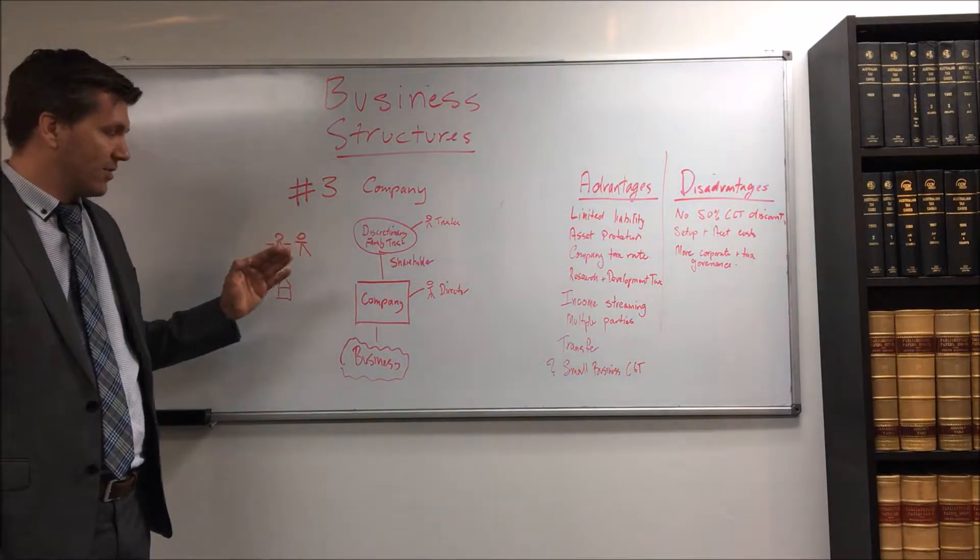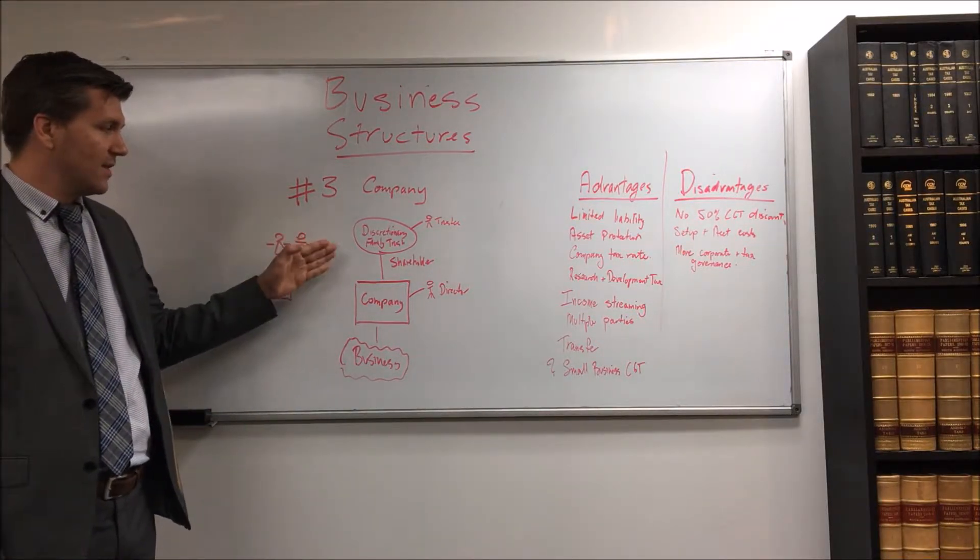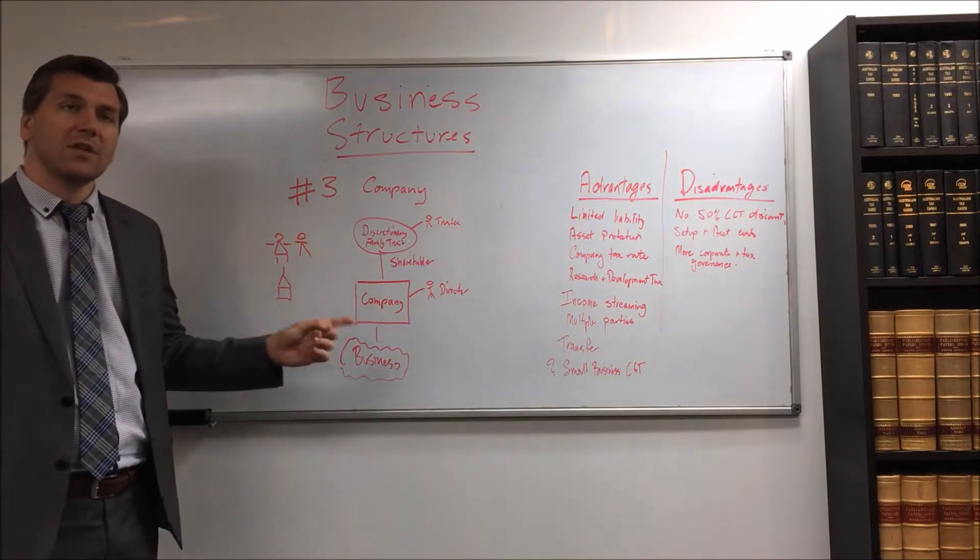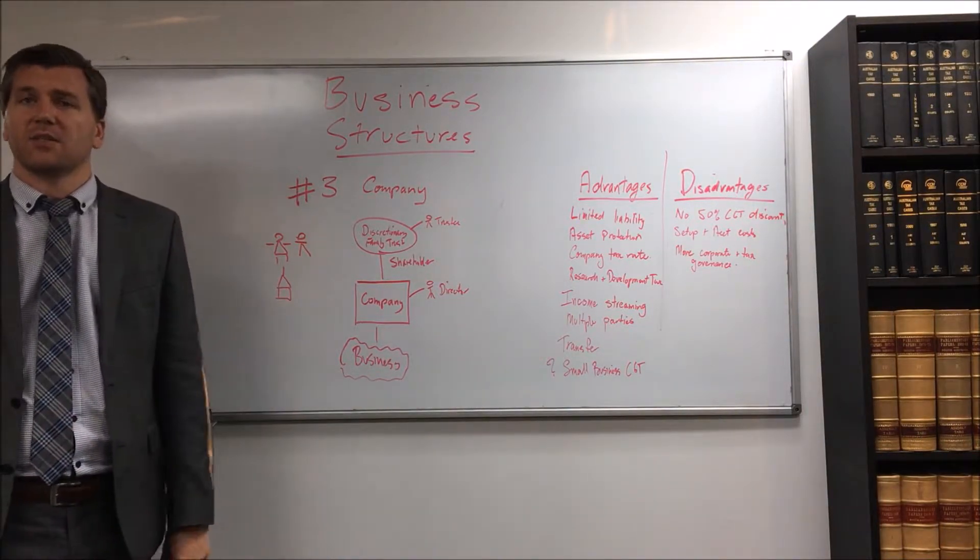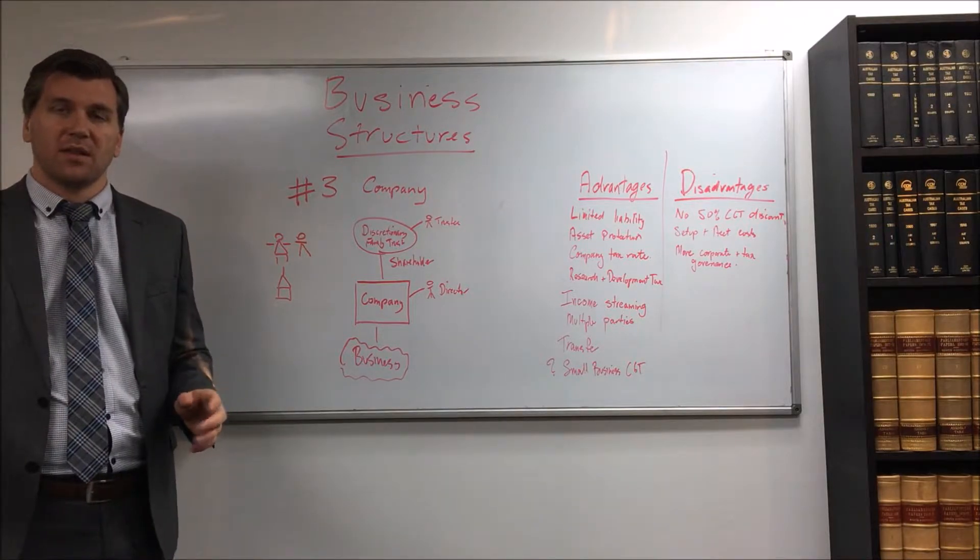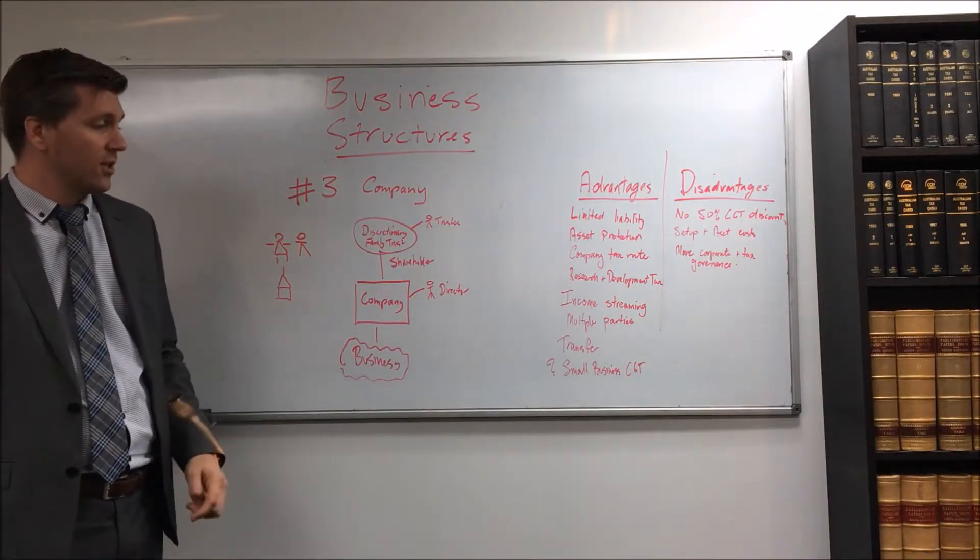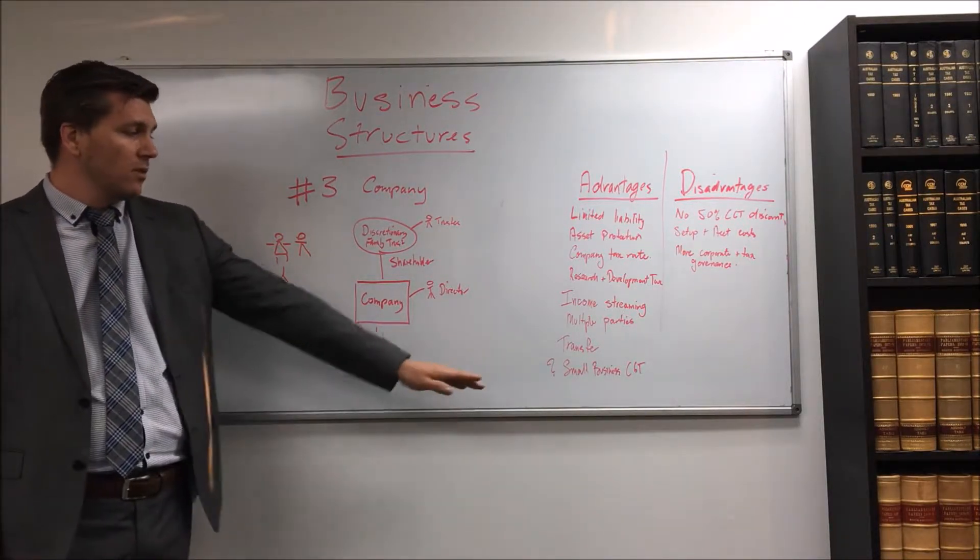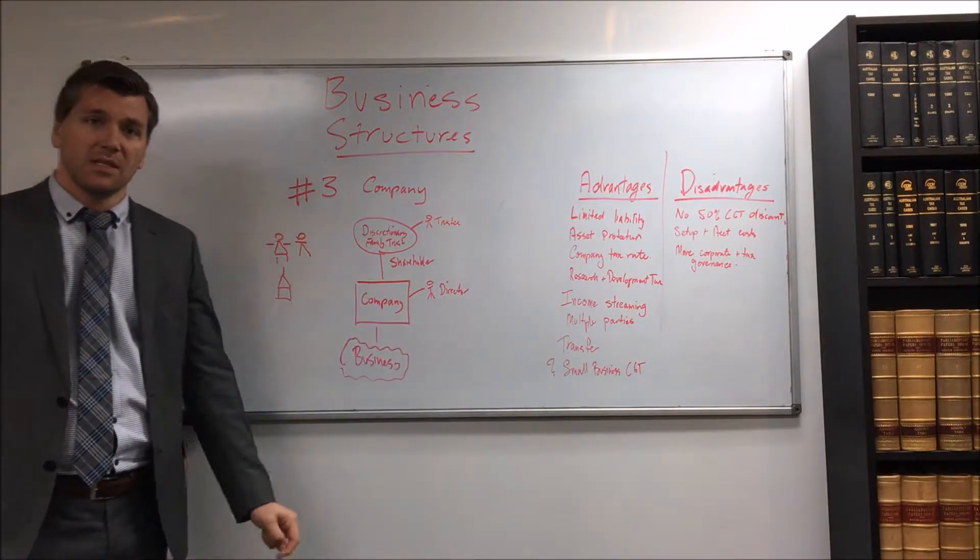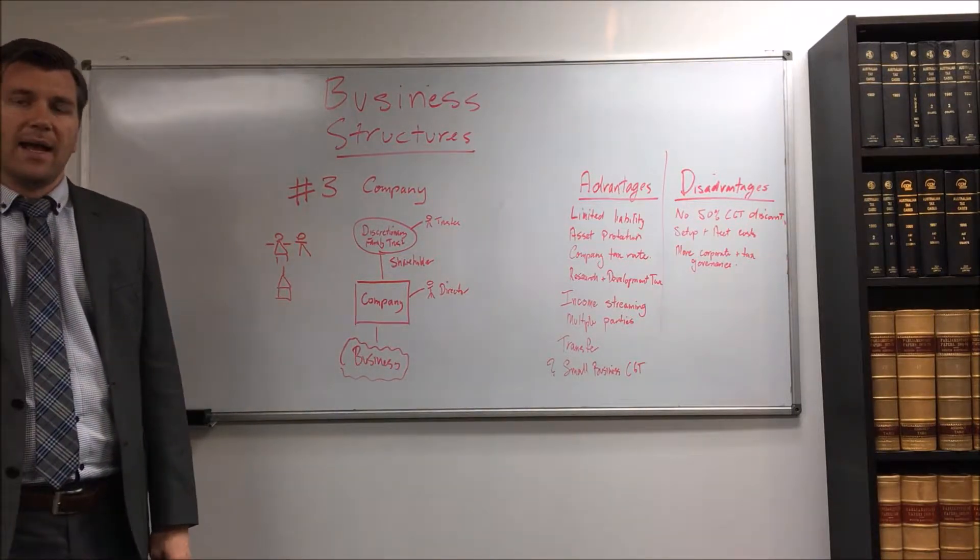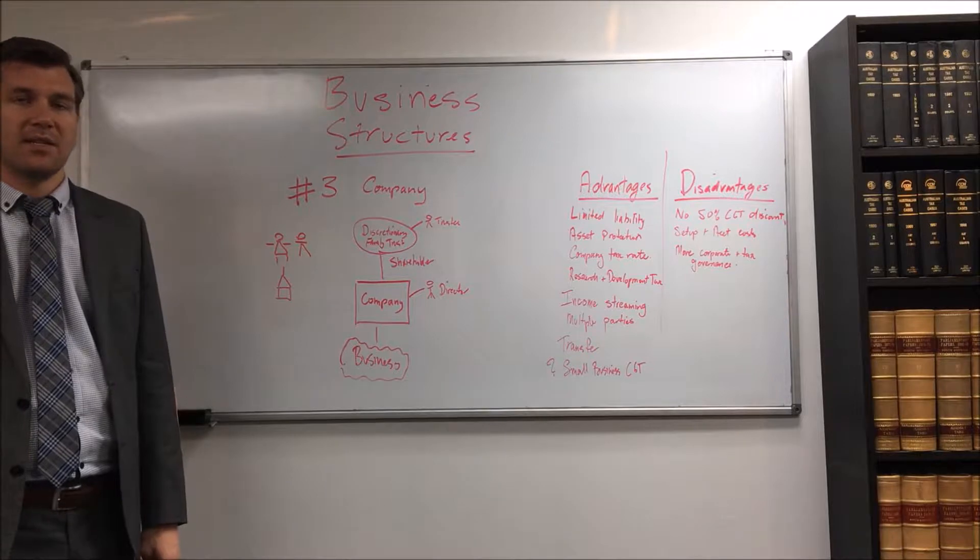So besides asset protection you'll want to have this income streaming. You can achieve income streaming by having different classes of shares and having discretion as to whether you distribute A class and B class shares, but if you do this you won't be able to access the small business CGT concessions.